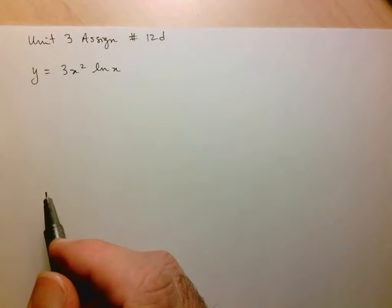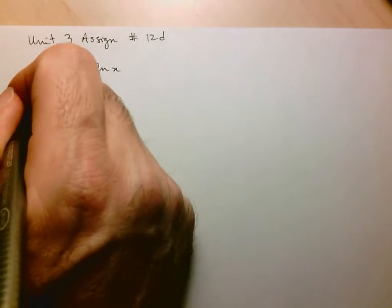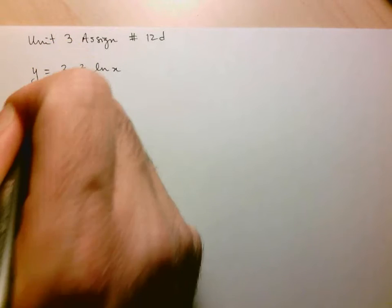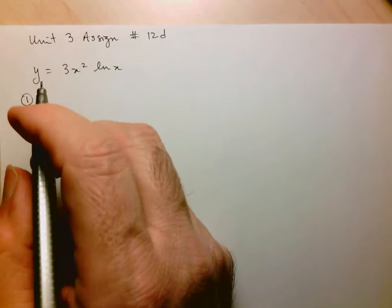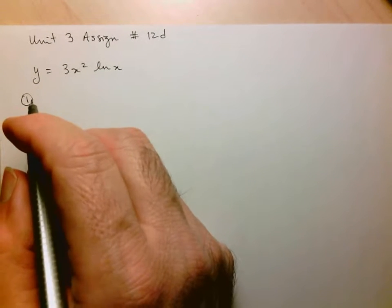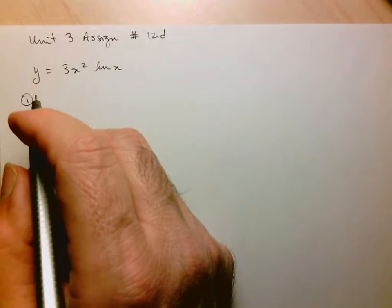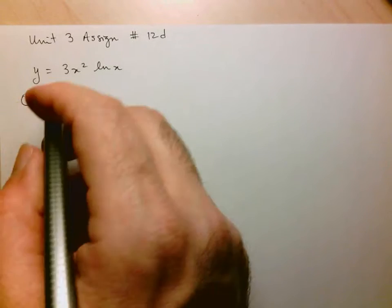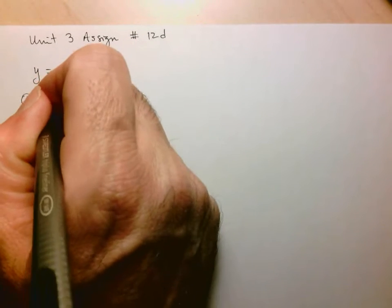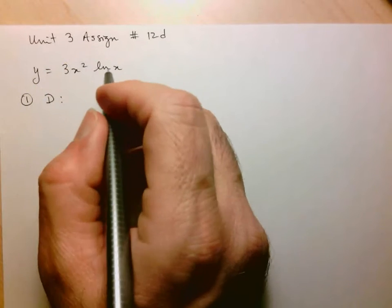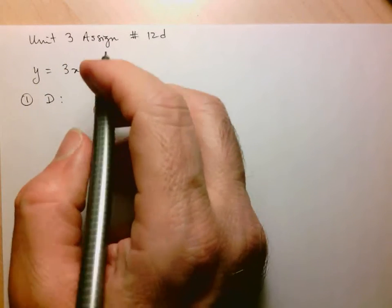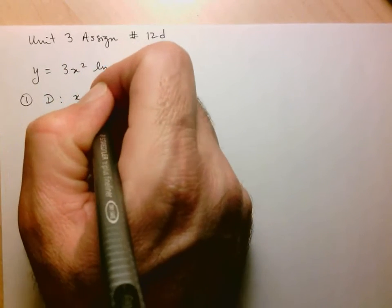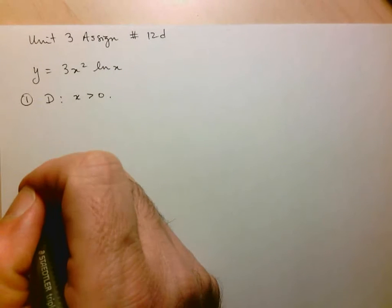Let's go ahead and do our three major steps. Part 1 is the information that can be gotten from the function. So let's start with the domain. Since we have lnx, we know that x has to be strictly greater than 0.